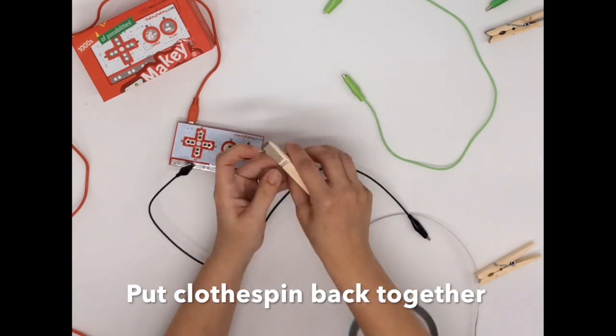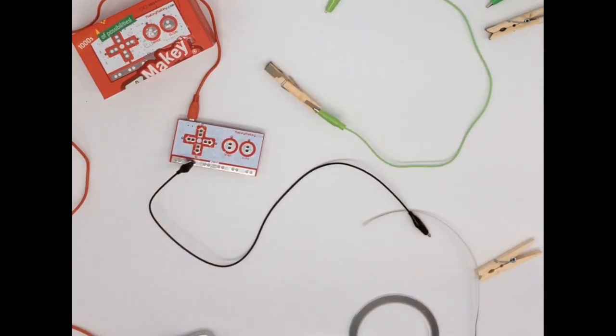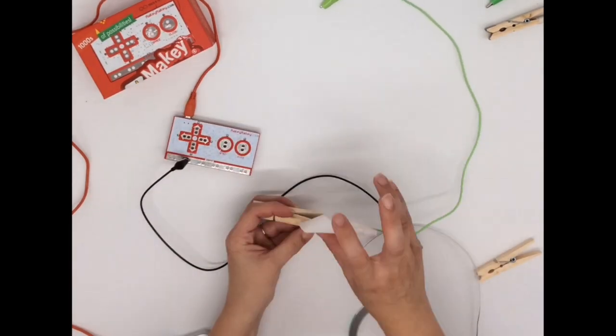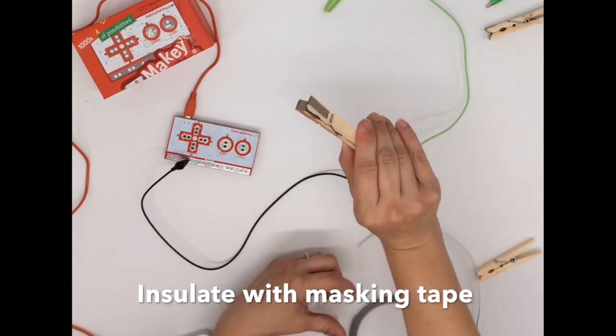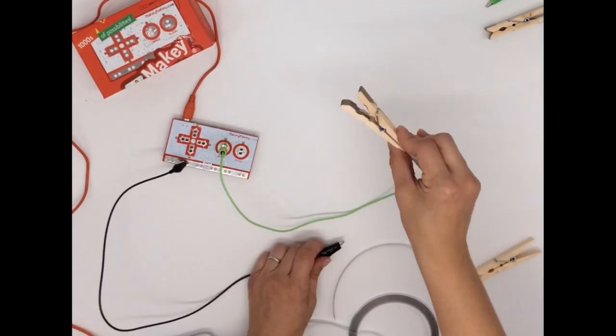And that's it. You just stick the alligator clip on the clothespin, insulate it with masking tape so you don't accidentally set off your Makey Makey, and now you can test materials.